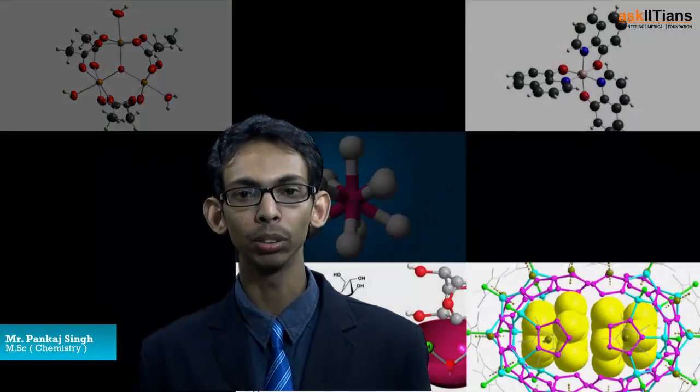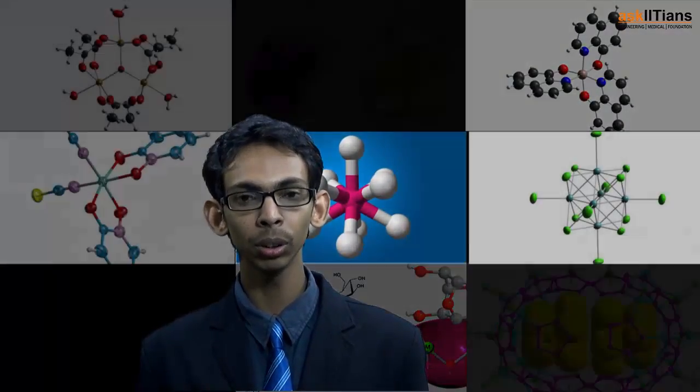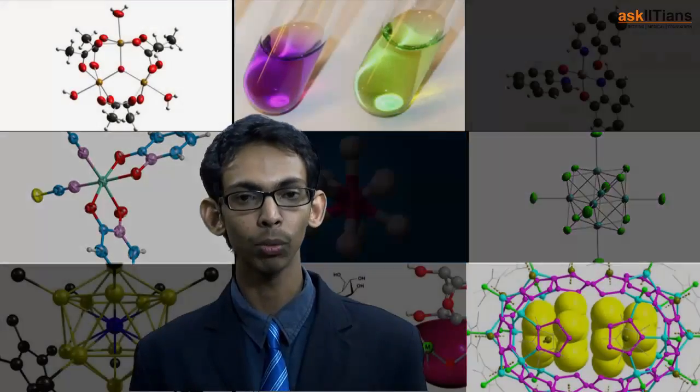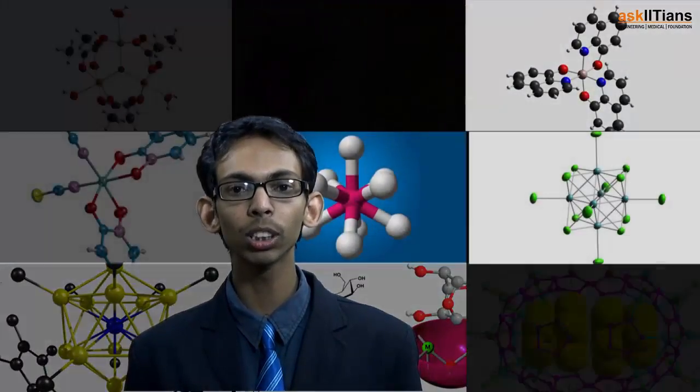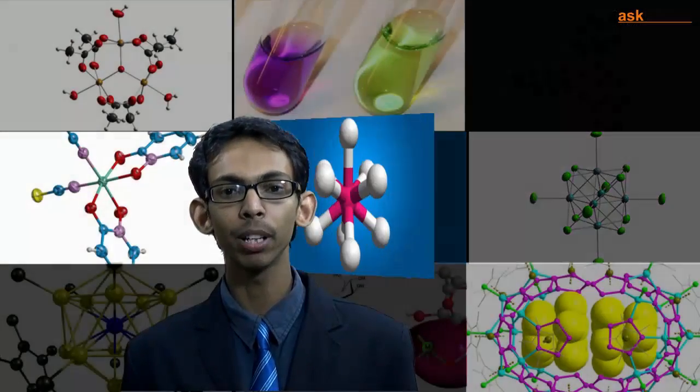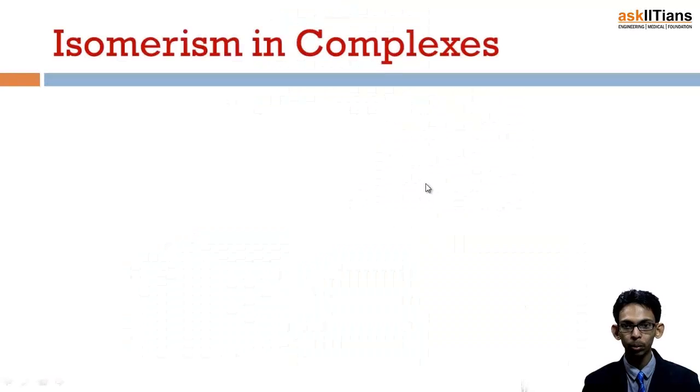Welcome students. Just like organic compounds, coordination compounds also show isomerism. Isomers are compounds which have similar chemical formula but different structural formula. Isomerism is basically of two types: one is structural and another one is stereo. We will study about isomerism in coordination compounds in more detail, along with some examples from past year papers in this video.